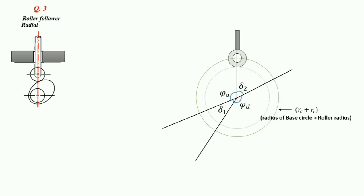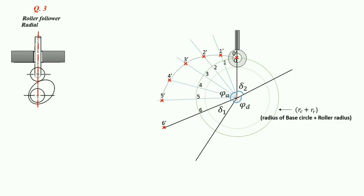Phi A is the angle of ascent. We divide this angle into 6 equal parts from 0 to 6. We draw lines starting from the center of the circle passing through each division point. We then mark these lines as per the displacement curve from 0' to 6' and join all the points. Next, we create a circle on each marked point with radius RR, and draw the final cam profile for the angle of ascent as a tangent to all these circles.